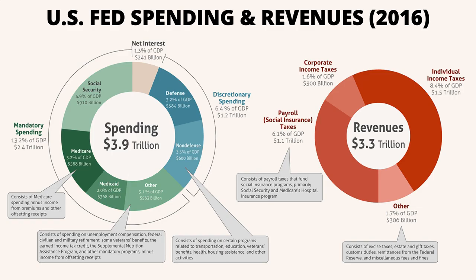Notice also that discretionary spending is divided into two categories: defense spending and non-defense spending. Keep in mind that the largest part of government spending is on entitlement programs — these are written into the law and include examples like Social Security and Medicare. Finally, total spending exceeded revenues by $600 billion, indicating that the federal government ran a budget deficit in 2016.